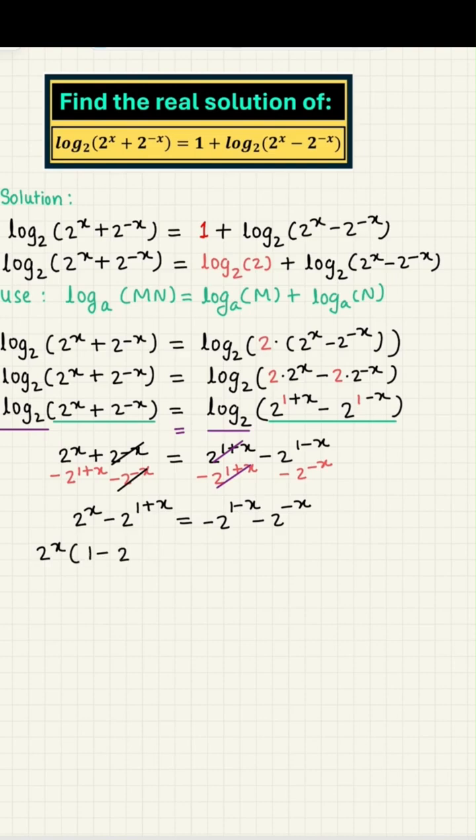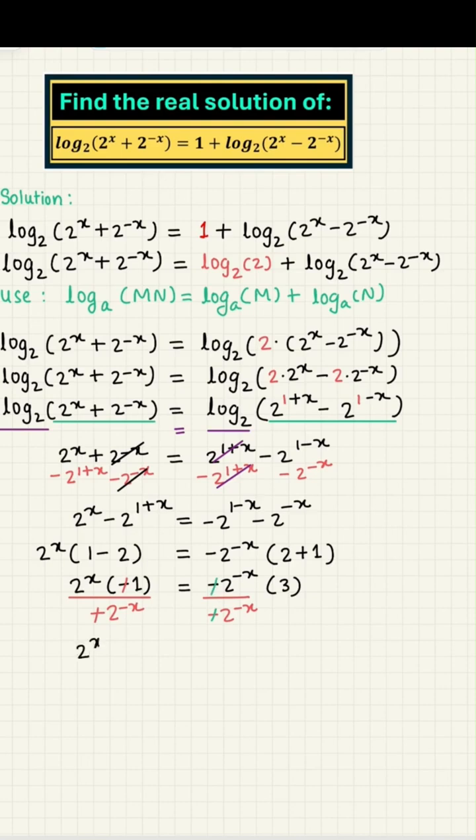And that gives us 2 to the power x equal to 2 to the power minus x times 3. Now remember, our goal is to solve for x, so we want x on one side of the equation. And to do so, divide both sides of the equation by 2 to the power minus x to bring all the x terms on the left-hand side. This gives us 2 to the power 2x equals 3.